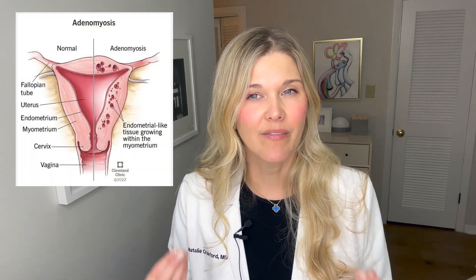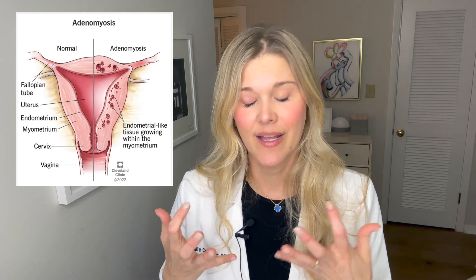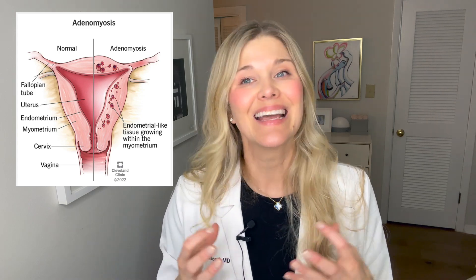Adenomyosis is a condition where you have endometrial-like tissue — the glands and the stroma of the endometrium — inside the muscular component of the uterus. The uterus actually has multiple layers. The inside layer is called the endometrium, the middle layer is the myometrium, and the outer layer is the serosa. The serosa is very smooth and shiny; it prevents anything from sticking to the outside of the uterus. The myometrium — the muscle part of the uterus — is the bulk of the uterus, what causes contractions when you go into labor, and what causes cramps when you have your period.